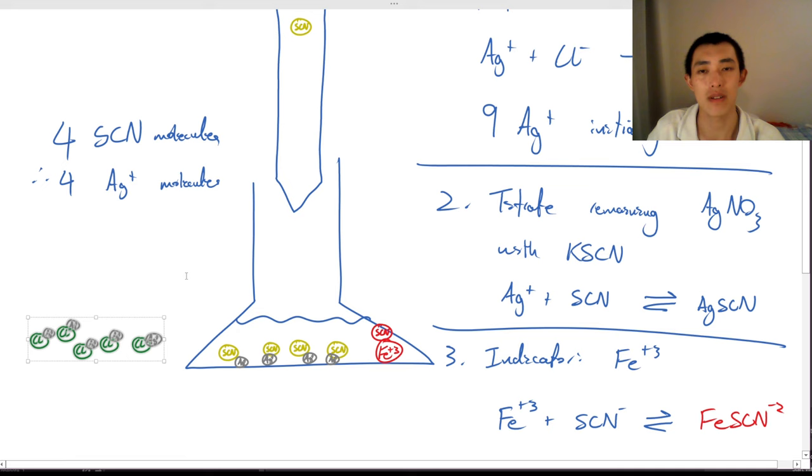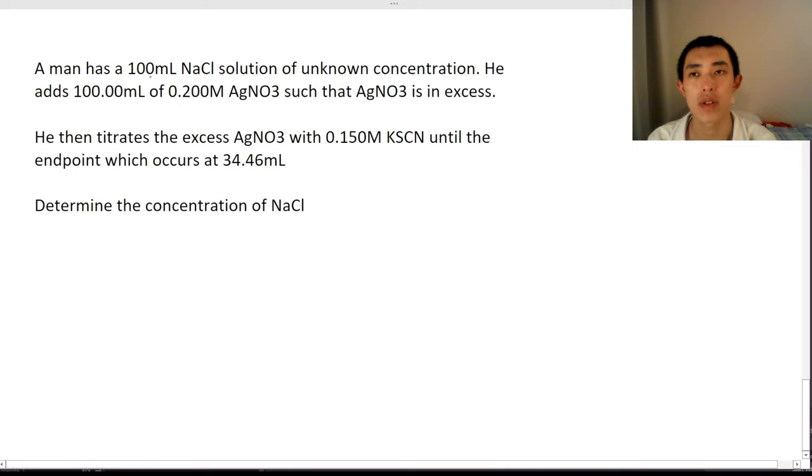Let's have a go at putting this in a real question. A man has a 100 milliliter sodium chloride solution of unknown concentration. He adds 100 milliliters of 0.2M silver nitrate such that AgNO3 is in excess. He then titrates the excess silver nitrate with 0.15M potassium thiocyanate until the endpoint which occurs at 34.46 mL. Determine the concentration of sodium chloride.